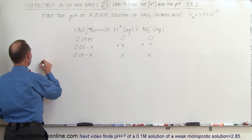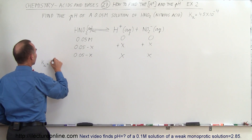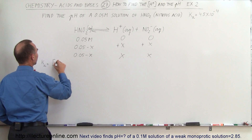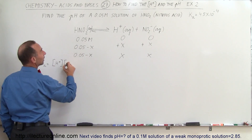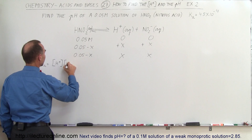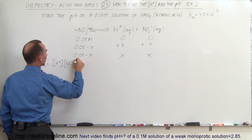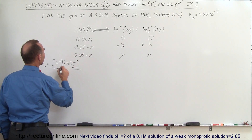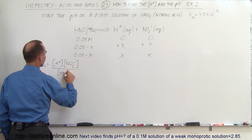The ionization constant, Ka, by definition is equal to the concentration of the hydrogen ion times the concentration of the conjugate base, divided by the concentration of the acid HNO₂.